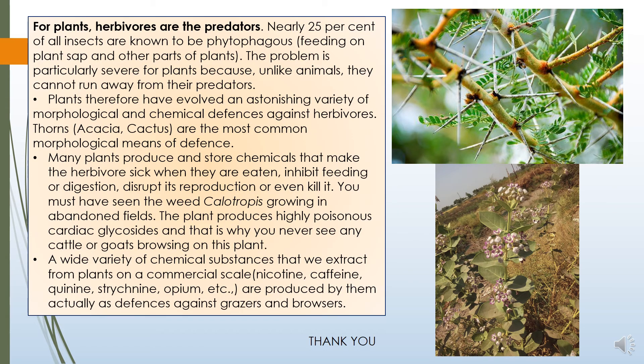For plants, herbivores are the predators. Plants have also developed different types of adaptations to protect themselves from their predators. We can see that 25% of all insects are known to be phytophagous — meaning they feed upon plant parts for their requirements, feeding on plant sap and other parts. The insects feed upon the sap, which is the fluid present inside the stem parts. Plants have developed different types of mechanisms to protect themselves from the effect of different insects.